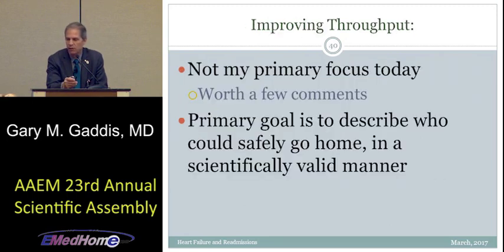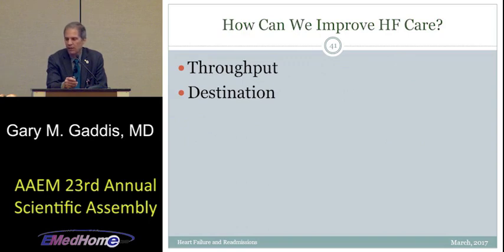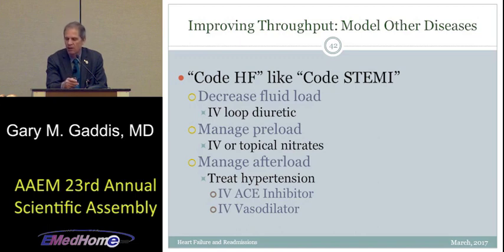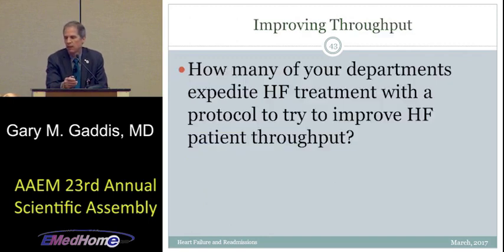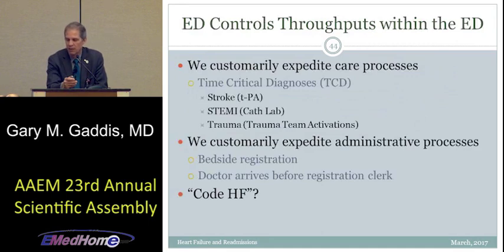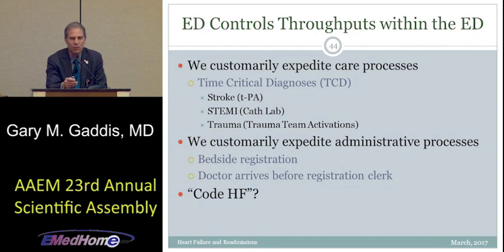Either way, a rule would be clinical decision support to decrease inter-physician practice variability and decrease 30-day readmission for heart failure patients. The code heart failure concept involves loop diuretic for fluid overload, managing preload with nitrates, managing afterload with antihypertensives, and decreasing myocardial VO2 to help the patient get out of heart failure faster. Heart failure is arguably a time-critical diagnosis, just like acute STEMI, acute ischemic stroke, or trauma, and we should treat it accordingly in the ED.